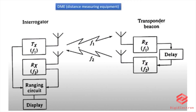We receive the signal from the ground station. The signal uses two frequencies, F1 and F2, to avoid interference. The two different frequencies are transmitted and received. The delay corresponds to F2.